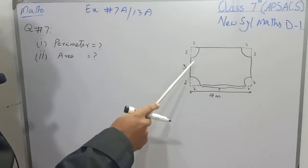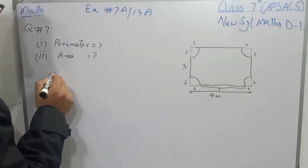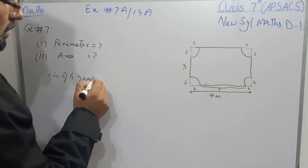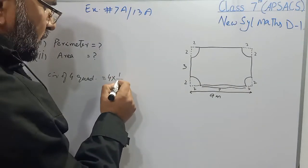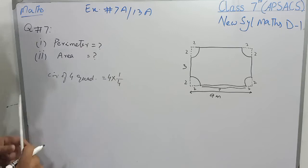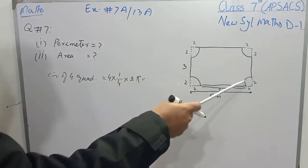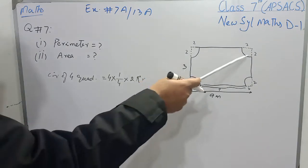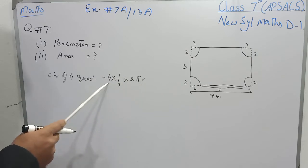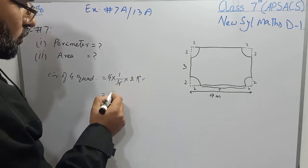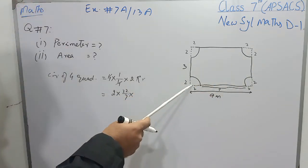Now we have to find the perimeter of 4 quadrants that are equal, each having a 2-meter radius. The circumference of 4 quadrants equals 4 multiplied by 1 over 4 multiplied by 2πr. The 4 quadrants and the 1 over 4 represent quarter circles. So the 4 and 4 cancel, giving 2 multiplied by pi (22/7) multiplied by the radius of 2.